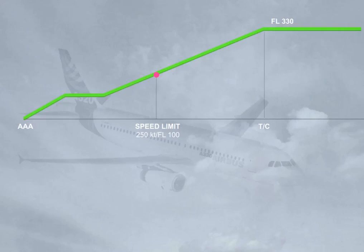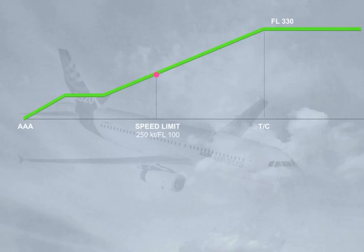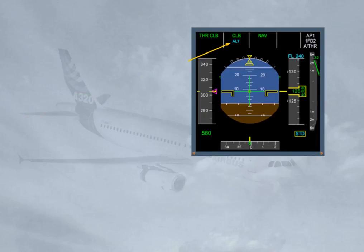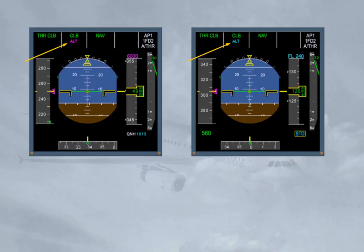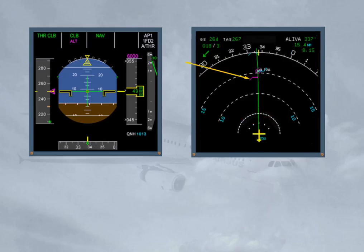Climb is automatically engaged at acceleration altitude. In climb mode, altitude constraints related to waypoints will be taken into account. Constraints can be respected or missed. Climb is always associated to ALT mode. ALT mode is displayed in blue if no altitude constraint is associated. ALT mode is displayed in magenta if an altitude constraint is associated to a waypoint. A magenta level-off arrow indicates where the aircraft will reach the constraint altitude. A blue start-of-climb arrow indicates where the aircraft will resume the climb once the waypoint is sequenced.